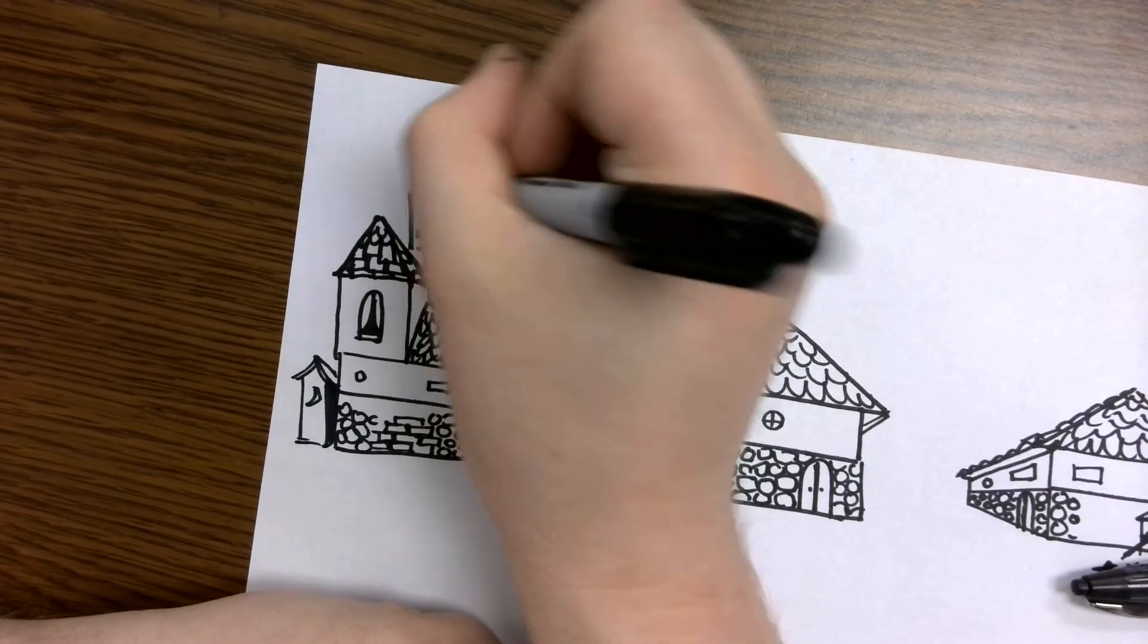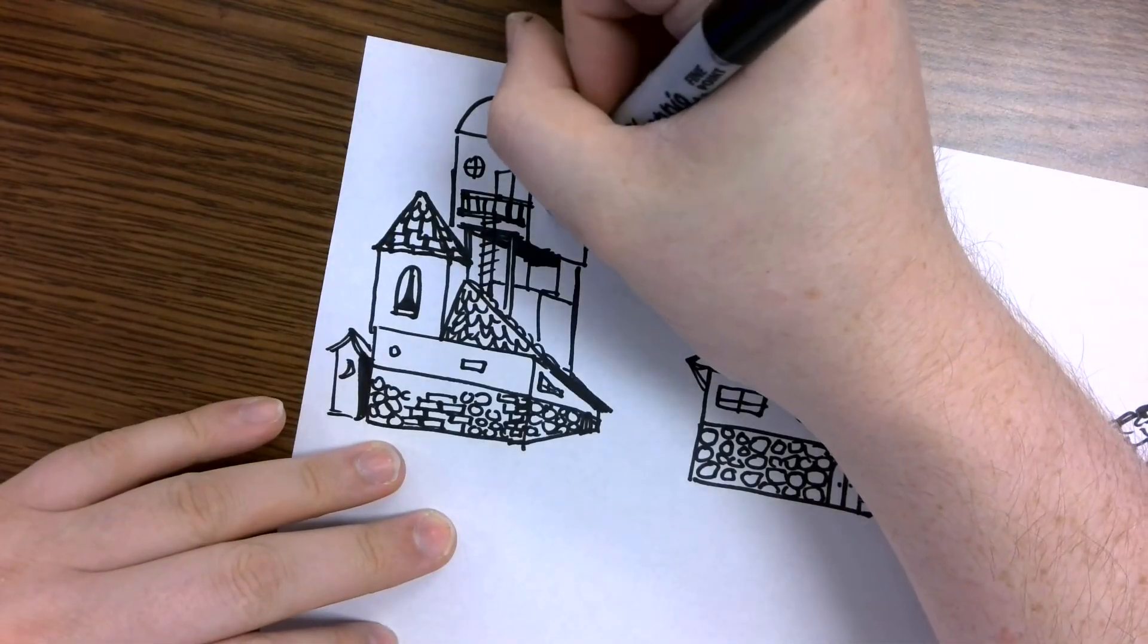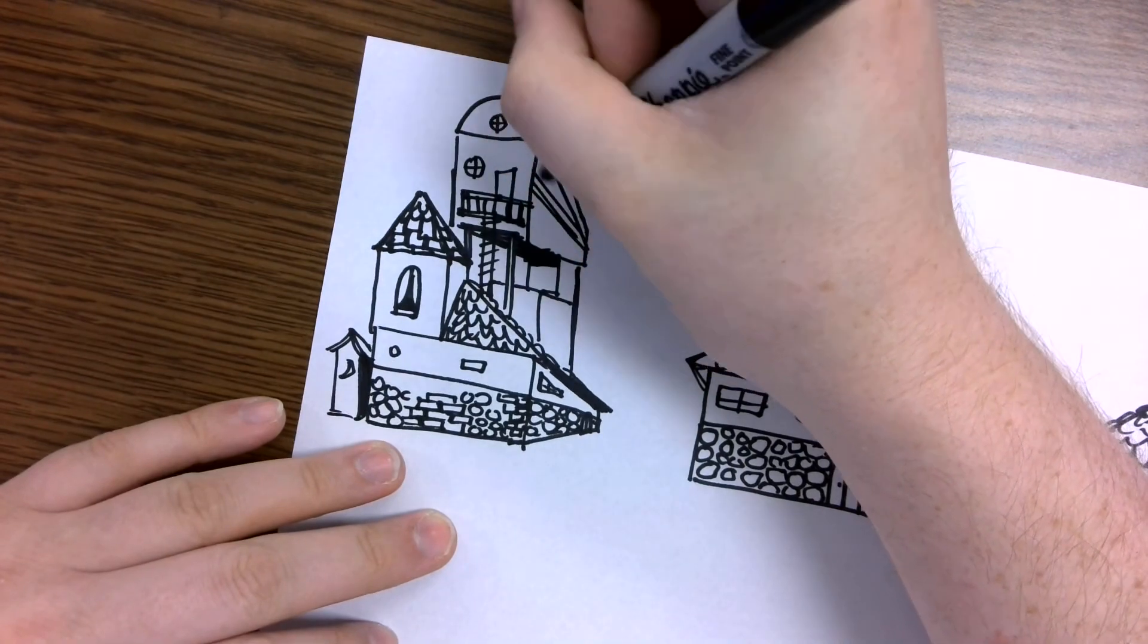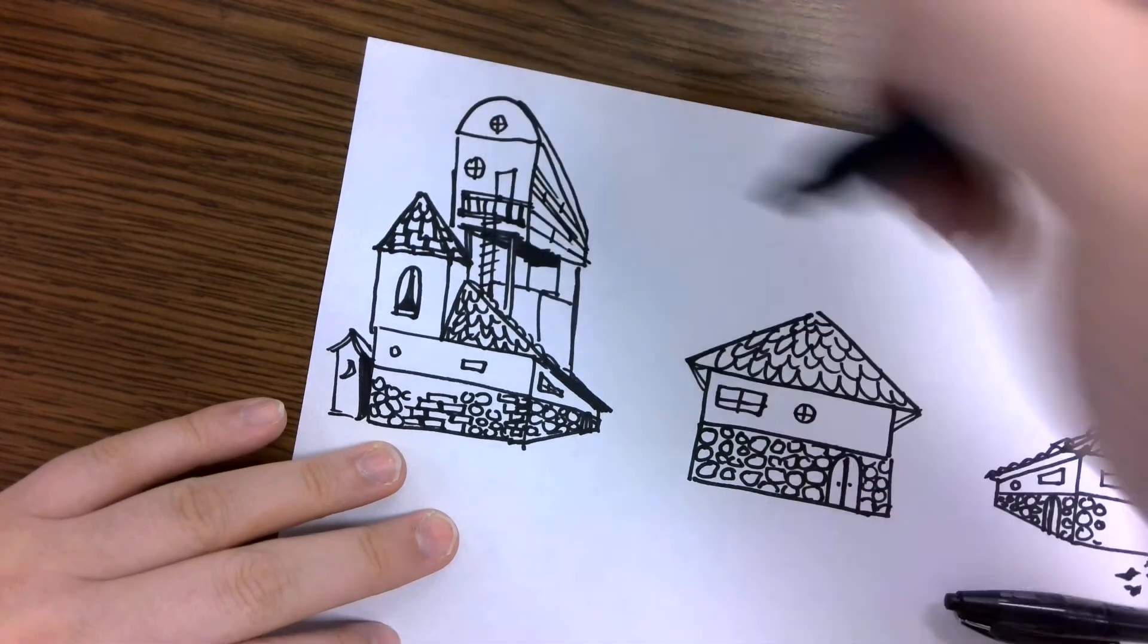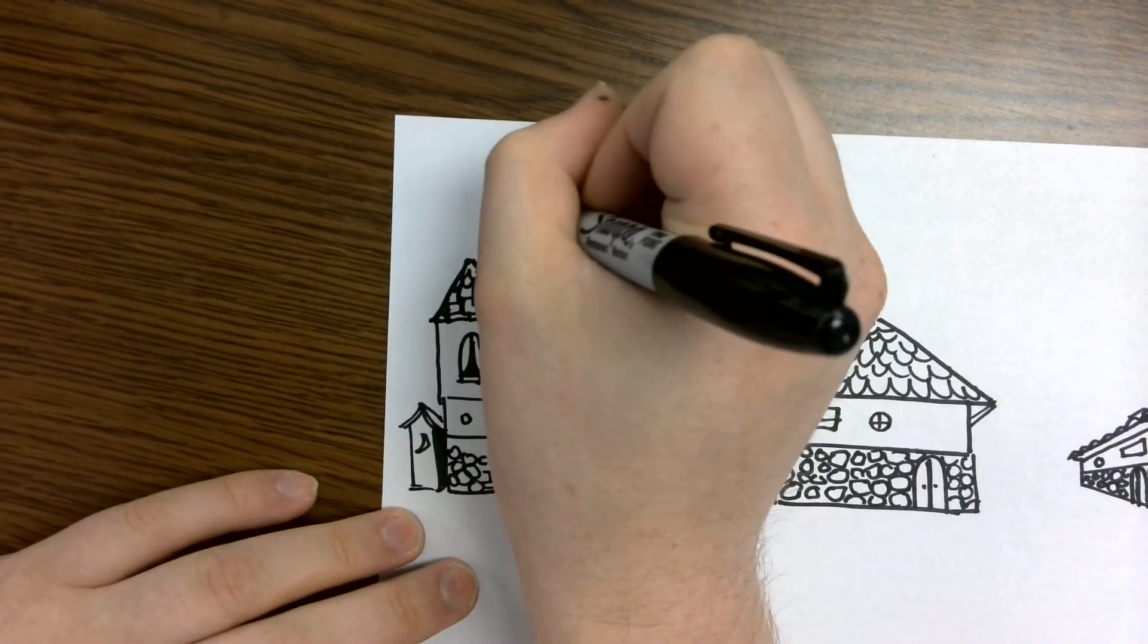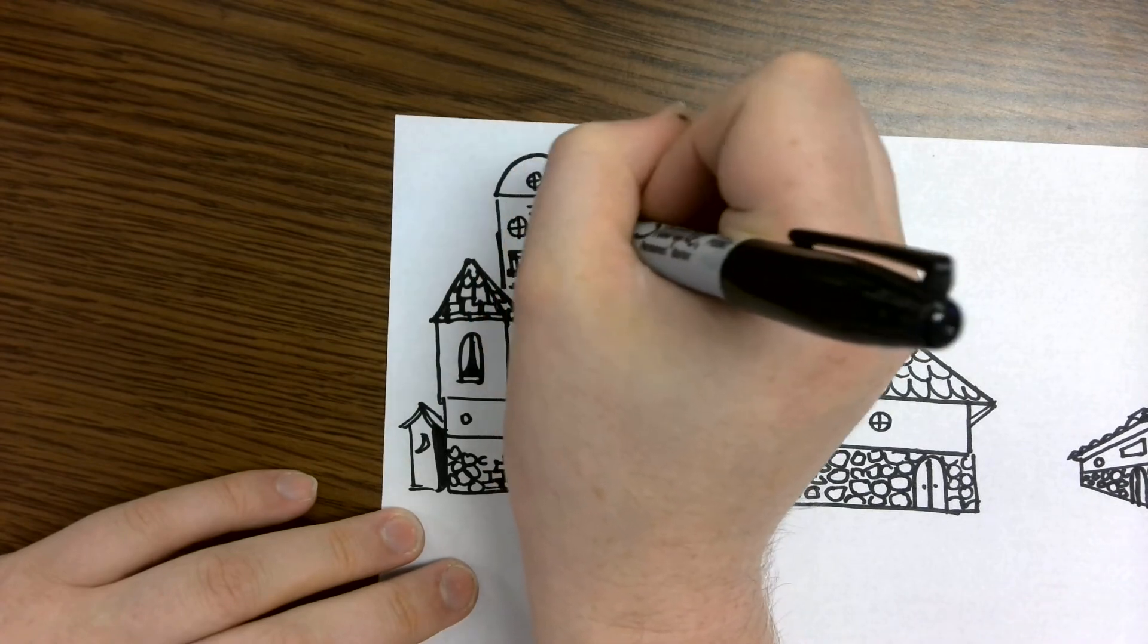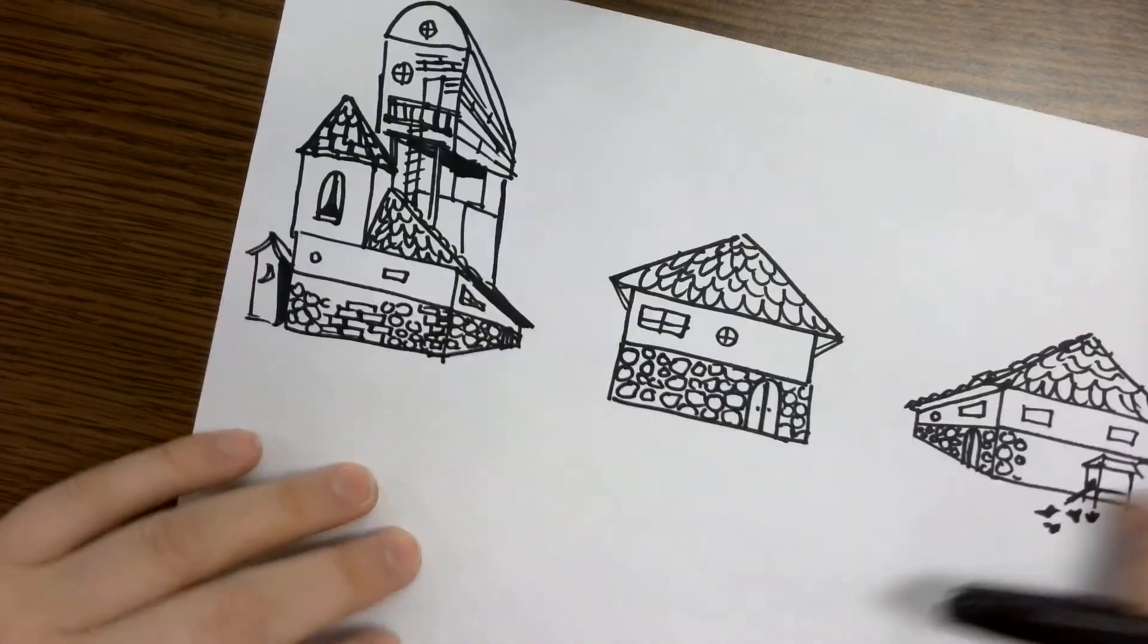Give him a little window. Maybe make some wood paneling on the sides here. Just lines going that way. Sort of like bricks but really long. There we go. And we've got a really fun 3D house.